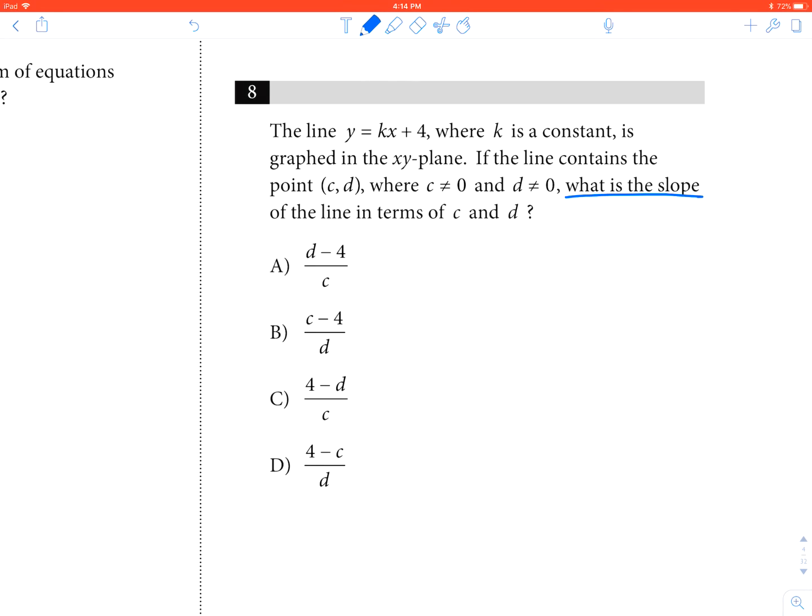So this question asks: what is the slope of the line in terms of c and d? Well, it looks like k is in the position of m, which is our normal slope. So k is our slope, but it wants it in terms of c and d.